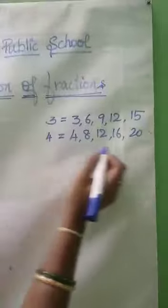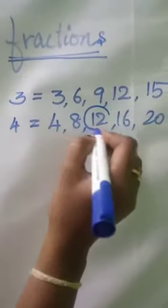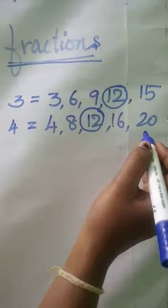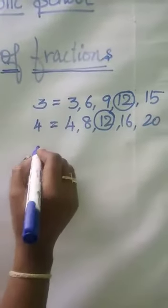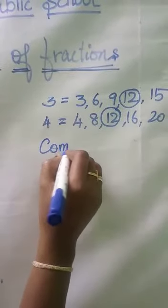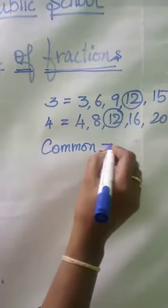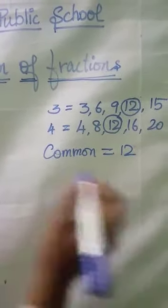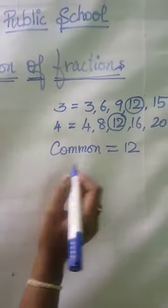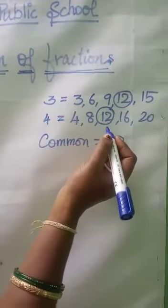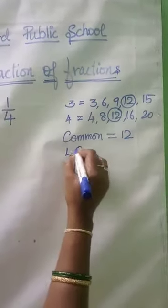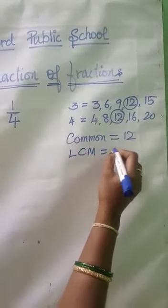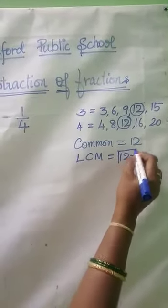So now what are the common multiples here? We are able to see 12. Any other? No. So common multiple here is 12. And what is the lowest common multiple here? The first multiple which is 12 is the lowest common multiple. So we are going to consider 12 as our LCM.